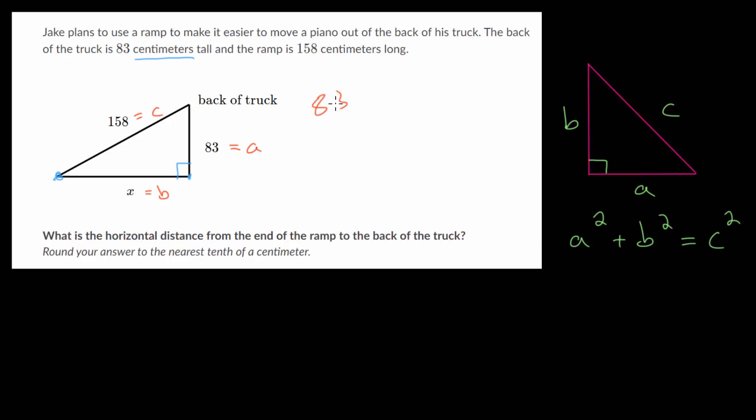So we have that a squared, that's 83 squared, plus b squared, which is x squared, is equal to c squared. And that's 158 squared. So let's simplify everything.